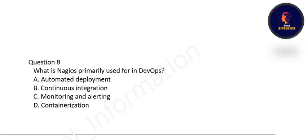Next question: what is Nagios primarily used for in DevOps? It is used for monitoring and alerting. Option C is correct.